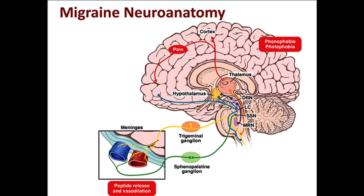The targets for migraine treatment involve reversal or prevention of those mechanisms. Acute treatment could reverse the vasodilation by vasoconstricting or prevent the release of the neuroinflammatory and vasodilating peptides. One can activate serotonin-1b receptors to vasoconstrict, activate serotonin-1d receptors to prevent the release of the neuroinflammatory peptides, or prevent the return of the signal back to the brainstem via activation of serotonin-1d receptors.